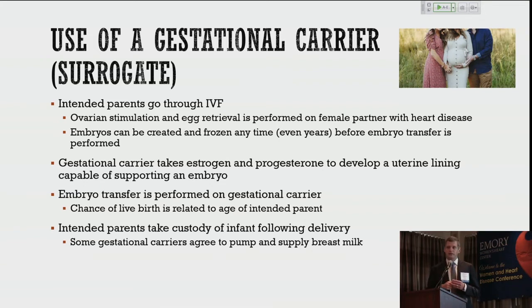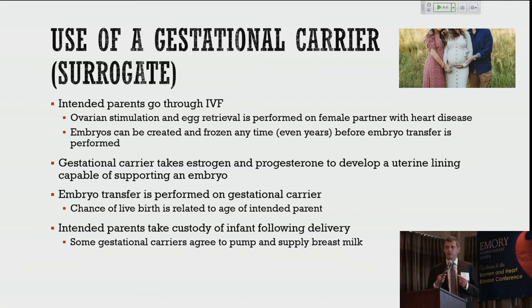How do we use the intended parent's eggs to help her conceive using a gestational carrier? The woman with heart disease, assuming she is healthy enough to go through IVF, will go through in vitro fertilization. We stimulate her ovaries, perform an egg retrieval — a very minor procedure — and collect eggs. We make embryos. Even if your patient is young and you've had a difficult conversation about her risk factors, she can come see me whenever she feels comfortable. I can make embryos for her any time in advance of her actually building her family with a gestational carrier.